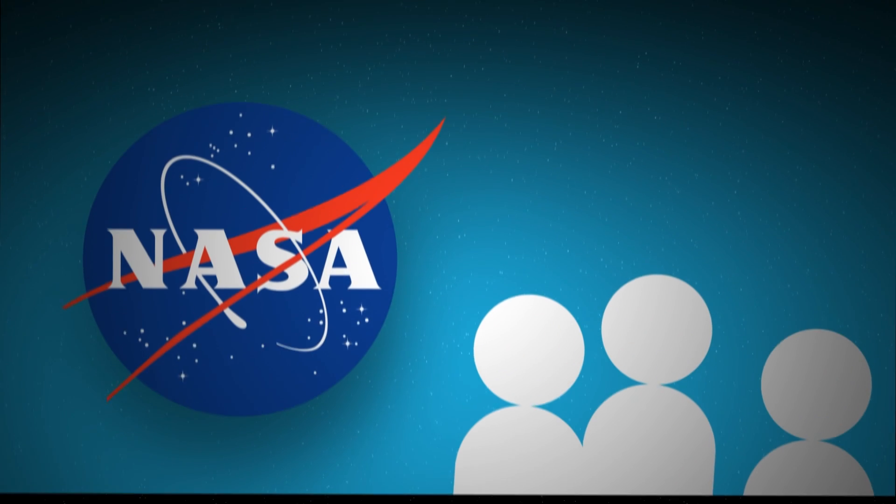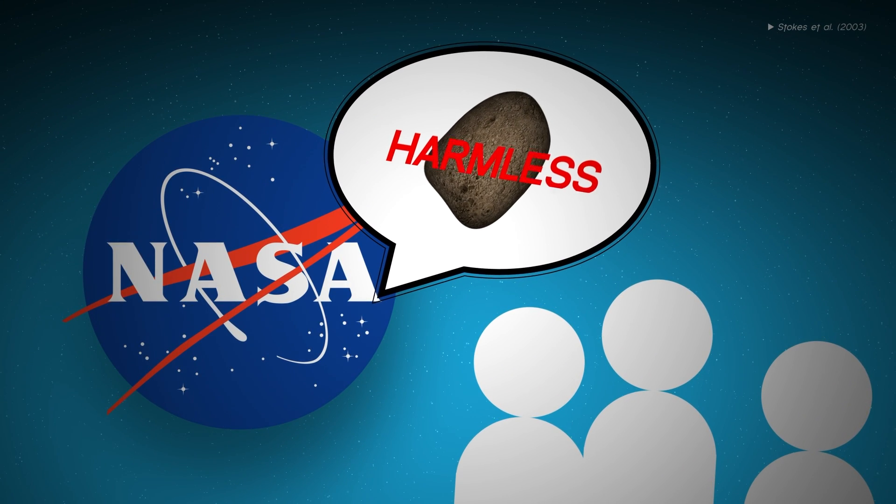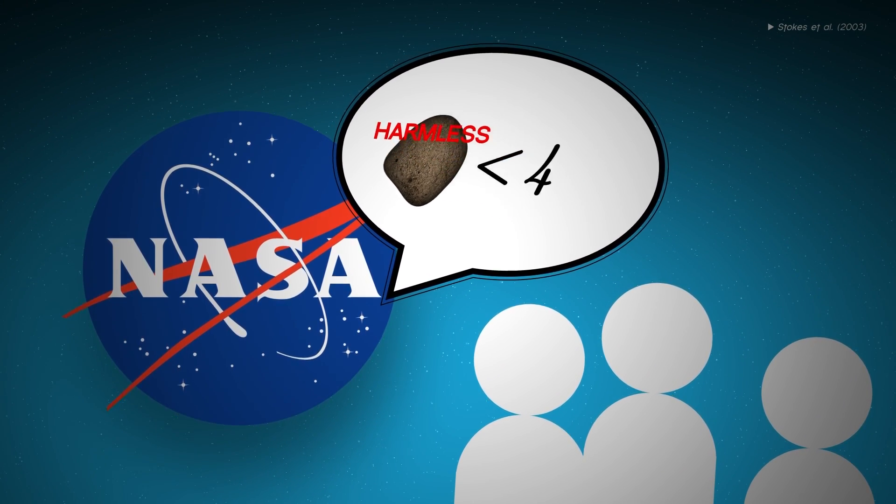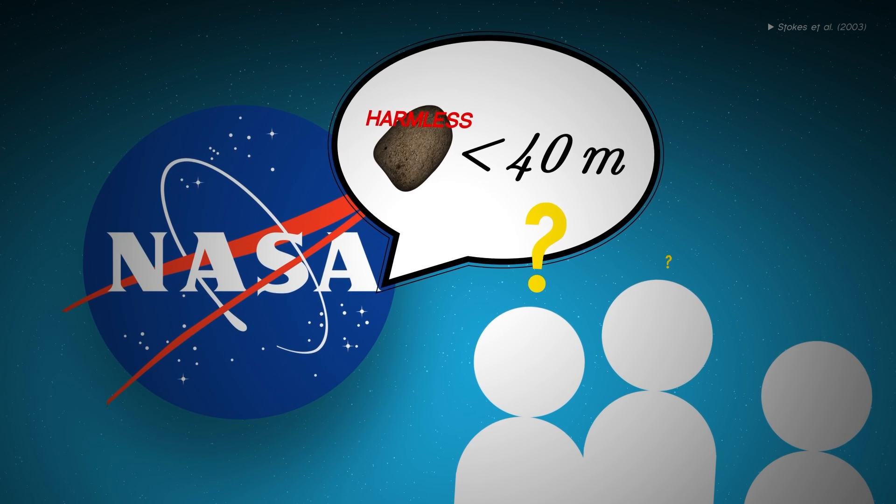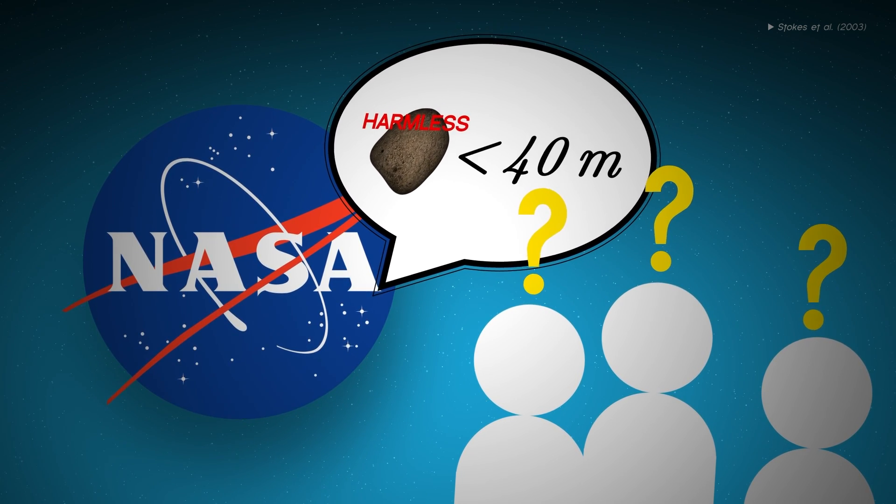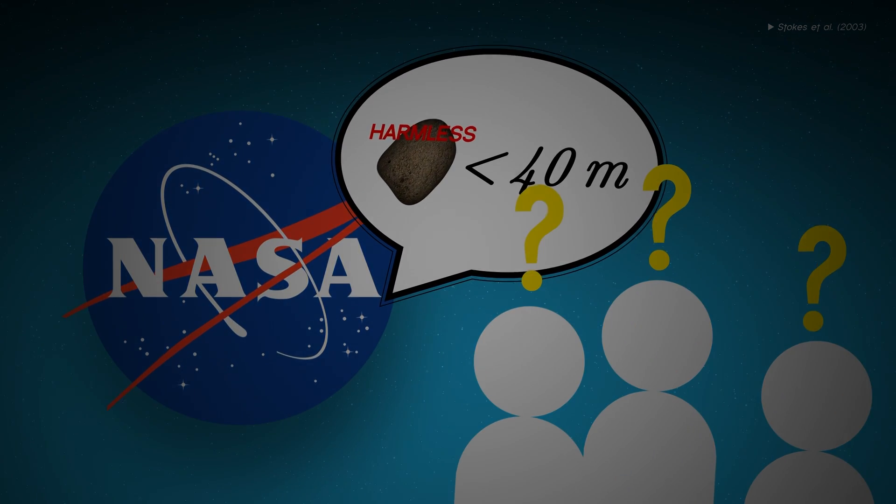In 2003, NASA declared an asteroid harmless if it measured less than 40 meters. But it wasn't long before the scientific community began to question that figure. The universe proved them right in 2013.